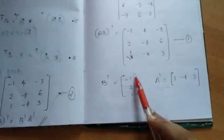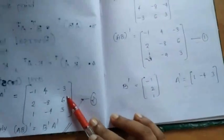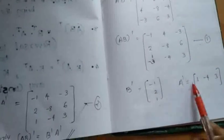Now we multiply B transpose times A transpose. B transpose is the column [-1, 2, 1] and A transpose is the row [1, -4, 3]. Multiplying: -1 into 1 is -1; -1 into -4 is 4; -1 into 3 is -3. Next row: 2 into 1 is 2; 2 into -4 is -8; 2 into 3 is 6. Next: 1 into 1 is 1; 1 into -4 is -4; 1 into 3 is 3. We denote this as equation two — B transpose A transpose.